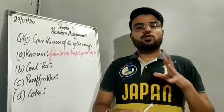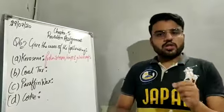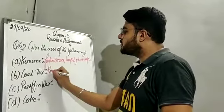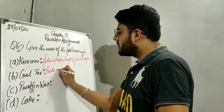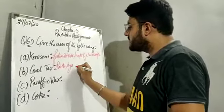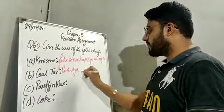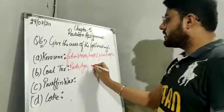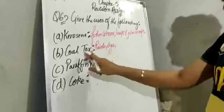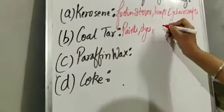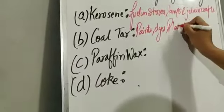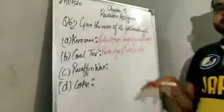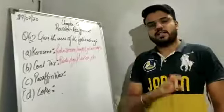Part B: what is the use of coal tar? Coal tar is a very useful product. It is used in making paints, dyes, and plastics, etc.